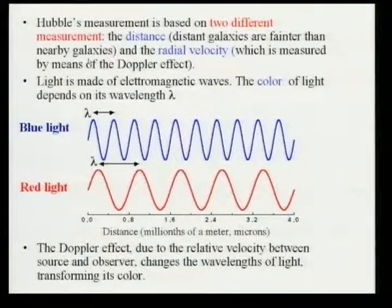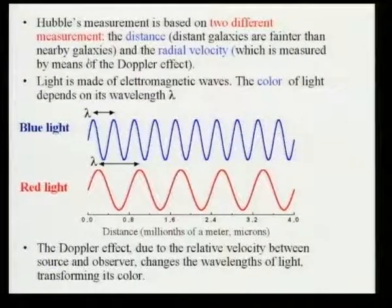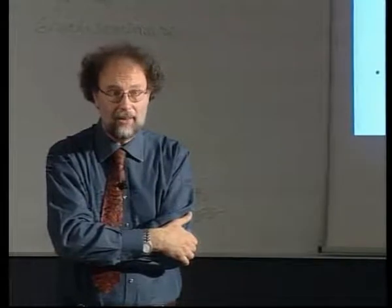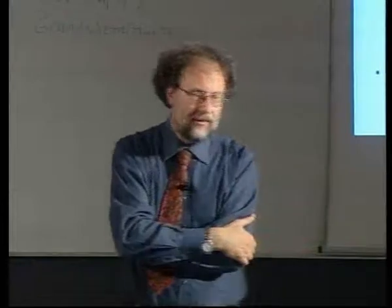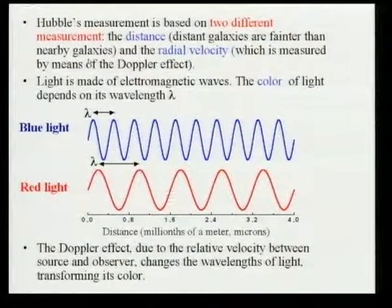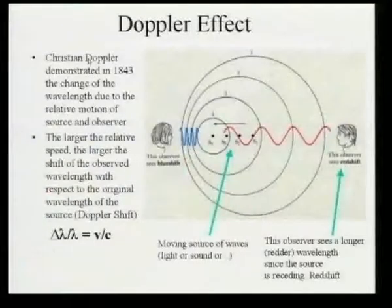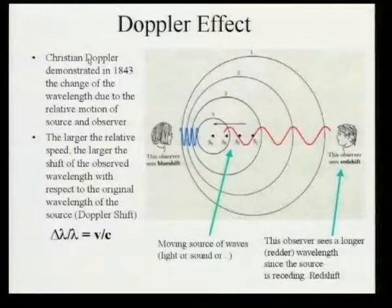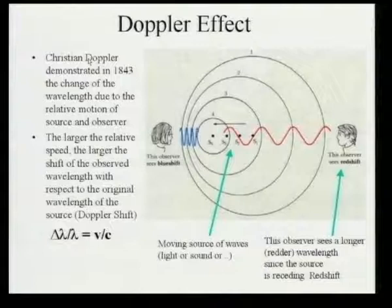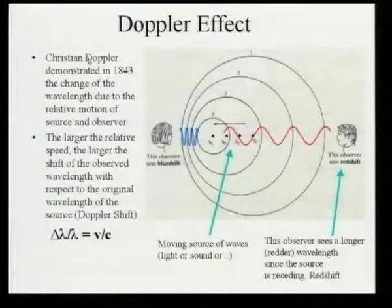The first interpretation of what was seen by Wirtz and Hubble was in terms of Doppler shift. Light is made of electromagnetic waves, and the color of light is our response to different wavelengths — blue light has short wavelengths, red light has longer wavelengths. The Doppler effect, which arises every time a source is moving with respect to the observer, changes the wavelength of light and transforms its color. An observer sees a longer wavelength, which means a redder color, when the source is receding.